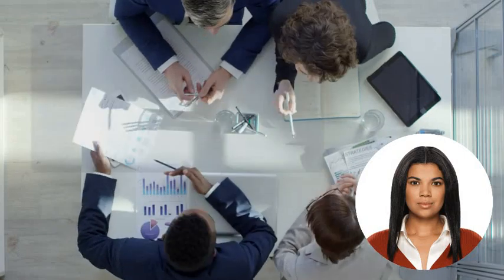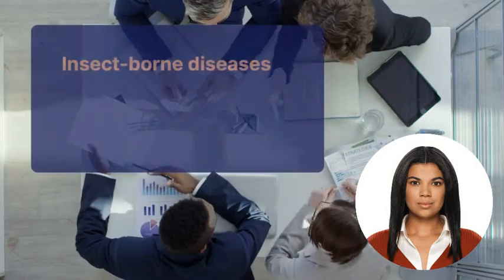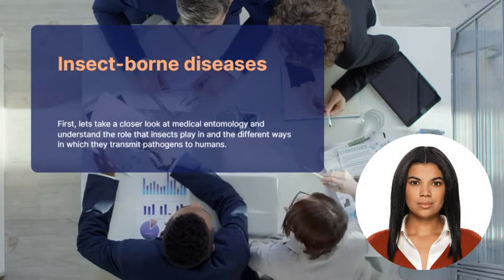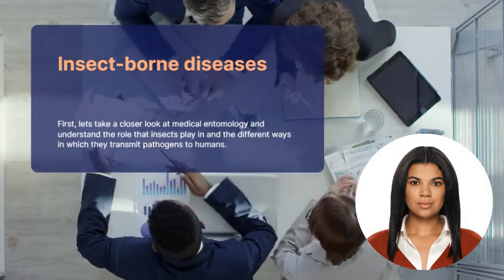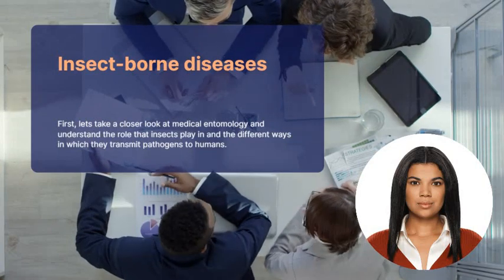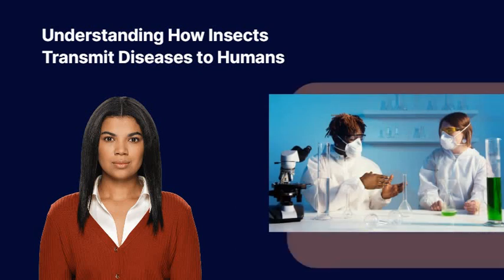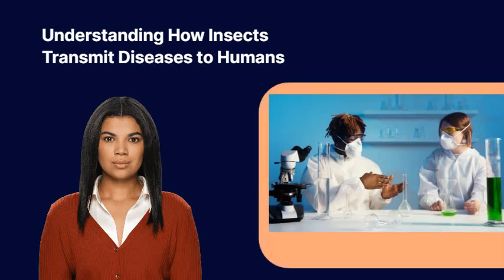But how can we protect ourselves from insect-borne diseases? First, let's take a closer look at medical entomology and understand the role that insects play and the different ways in which they transmit pathogens to humans. Insects can transmit numerous types of diseases to humans, most of which are contagious infections caused by viruses and parasites. Depending on the type of insect and the type of pathogen they carry, the symptoms can range from minor illnesses to deadly conditions.